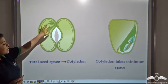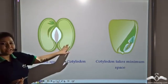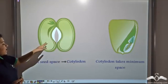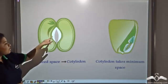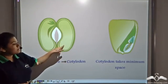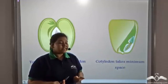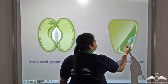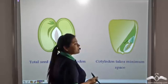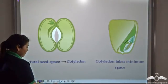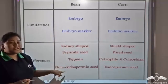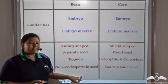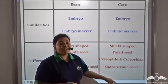In case of a bean, where there is no endosperm, the cotyledon takes the maximum space inside the seed — this is the cotyledon. But in case of a corn, which is an endospermic seed, the cotyledon takes the minimum space — this is the cotyledon. So beans are non-endospermic seeds and corns are endospermic seeds.